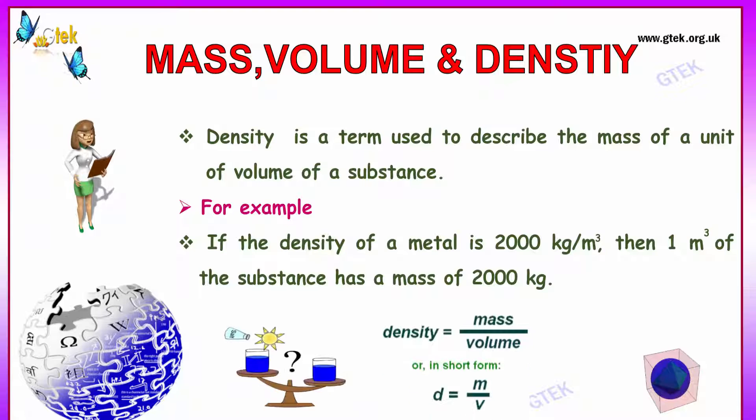For example, if the density of a metal is 2000 kg per meter cube, then 1 meter cube of the substance has a mass of 2000 kg. As defined, the formulation is density equals mass divided by volume.